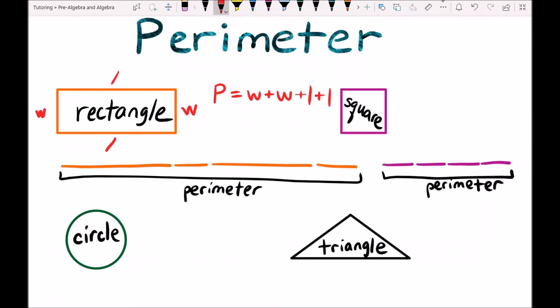Width plus width plus length plus length, which is the same thing that we did here. We added up the two long sides and the two short sides. Two widths and two lengths.